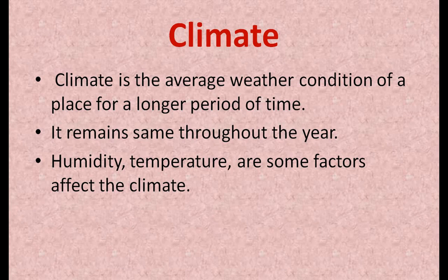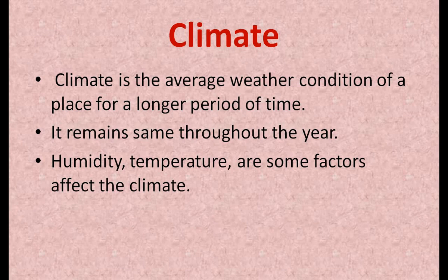To summarize the differences: weather is the day-to-day changing condition, while climate is the average weather condition. Weather changes many times in a day, whereas climate remains the same throughout the year. Weather changes occur for a short period of time and cover small areas, but climate covers large areas and changes only over a long period of time. Factors affecting weather include wind, sunshine, temperature, and rainfall; factors affecting climate include humidity and temperature.